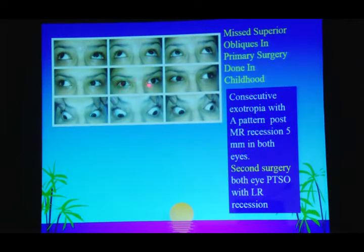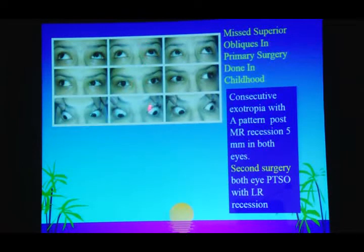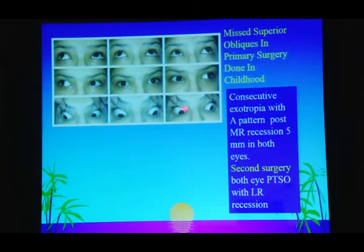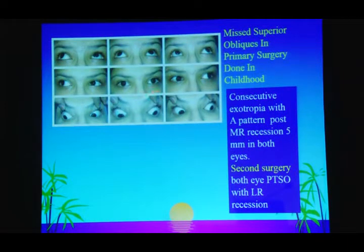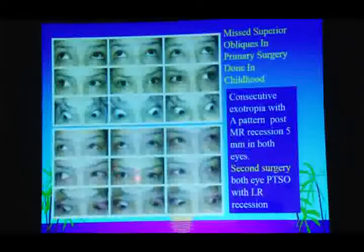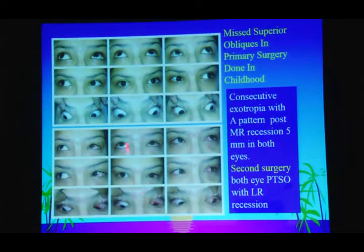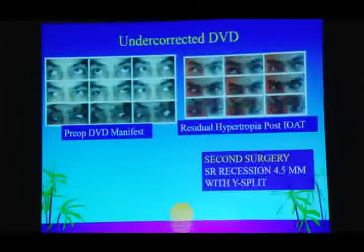Another case: consecutive exotropia. In childhood, bimedial recessions of 5mm were done elsewhere and she had persistent exo, but never had the courage to return. When she came of marriageable age, she came to us. The problem was superior oblique overactions missed in the first sitting. We performed bilateral posterior tenectomy of the superior oblique with LR recession — she is now corrected straight in primary position, downgaze, and upgaze, with hypertrophia also corrected.